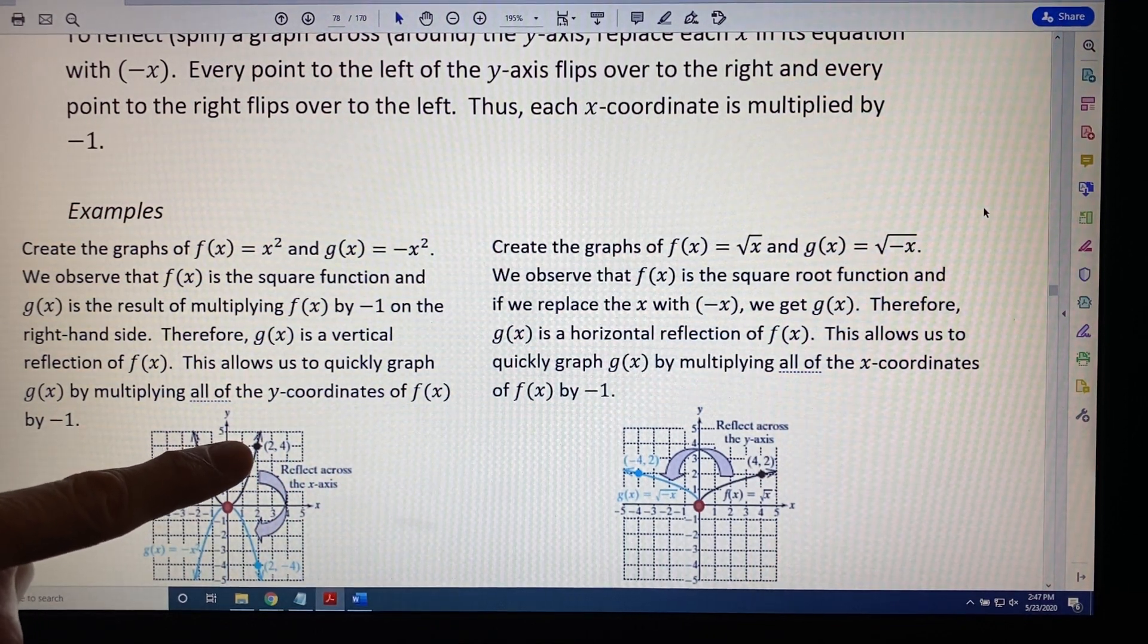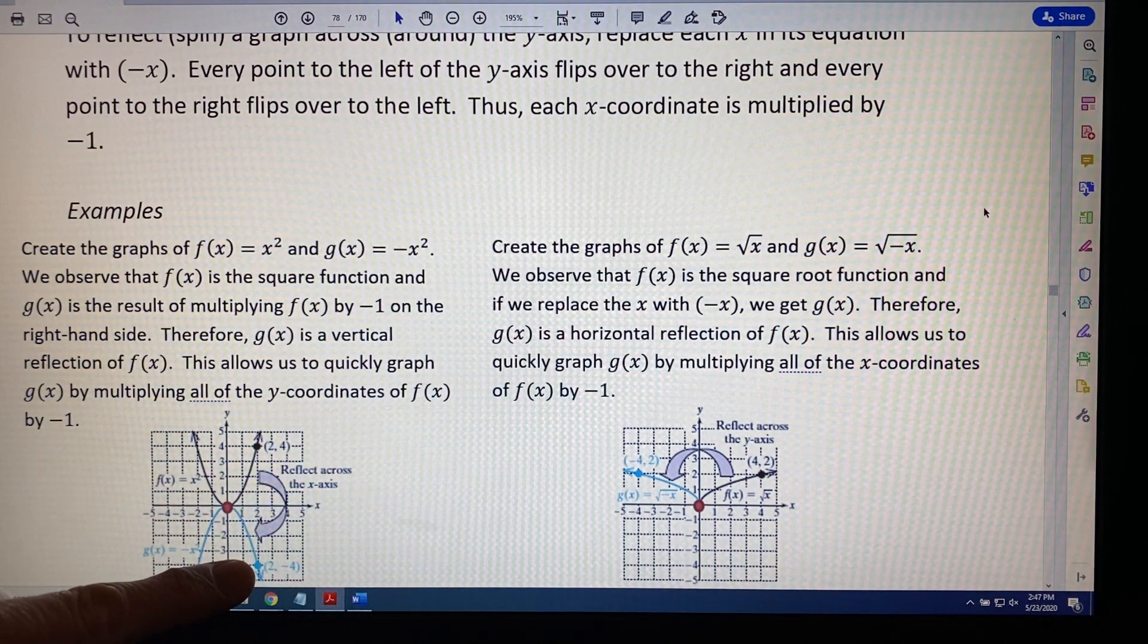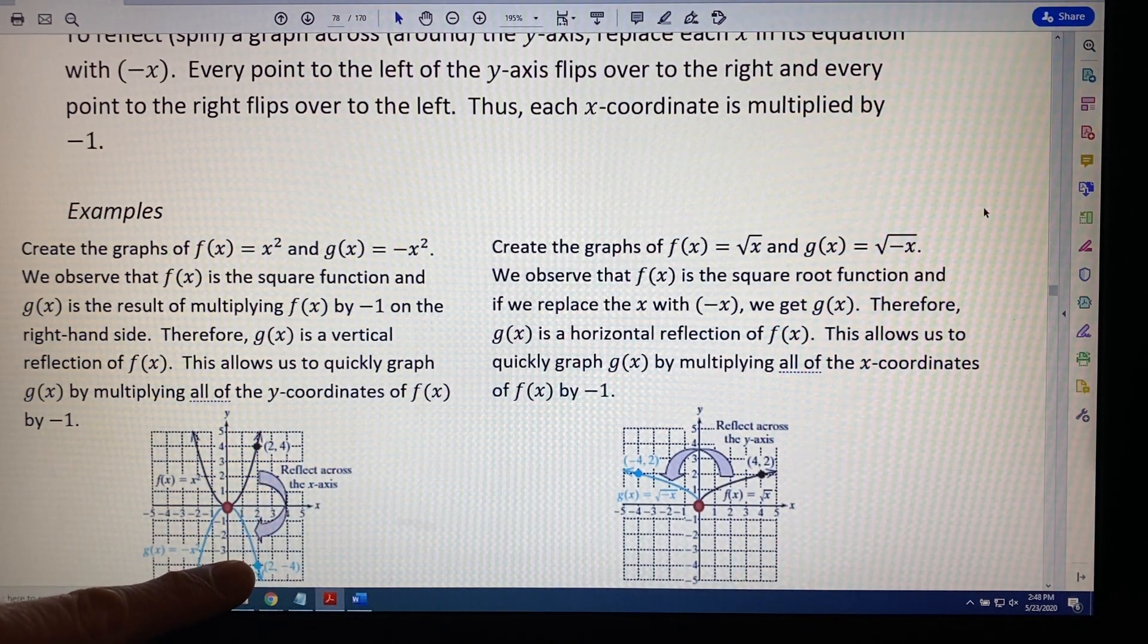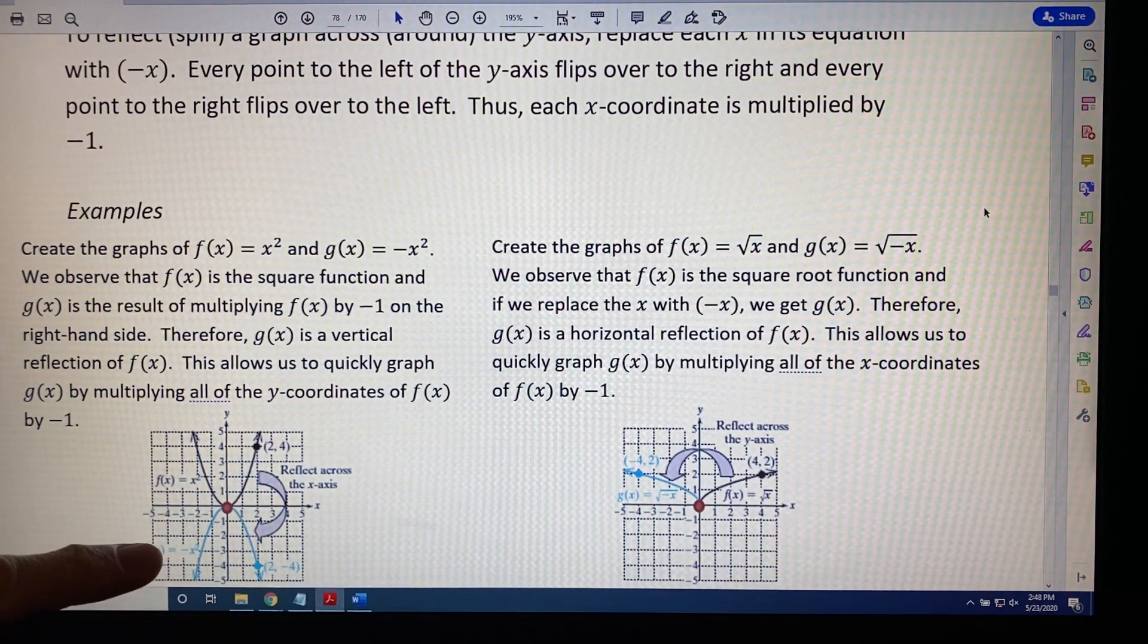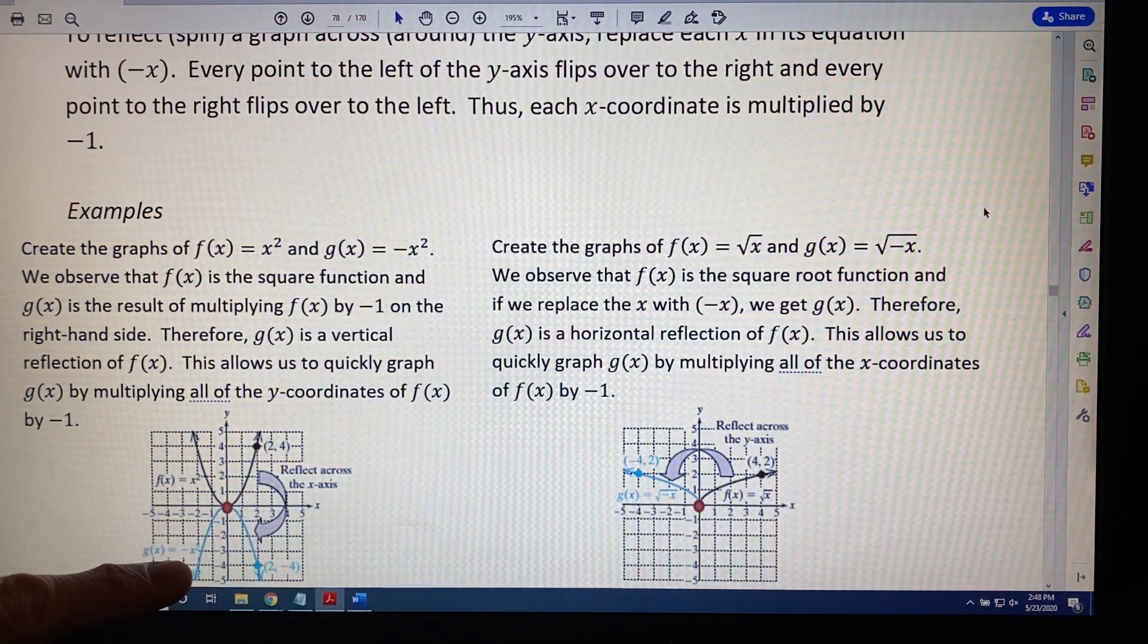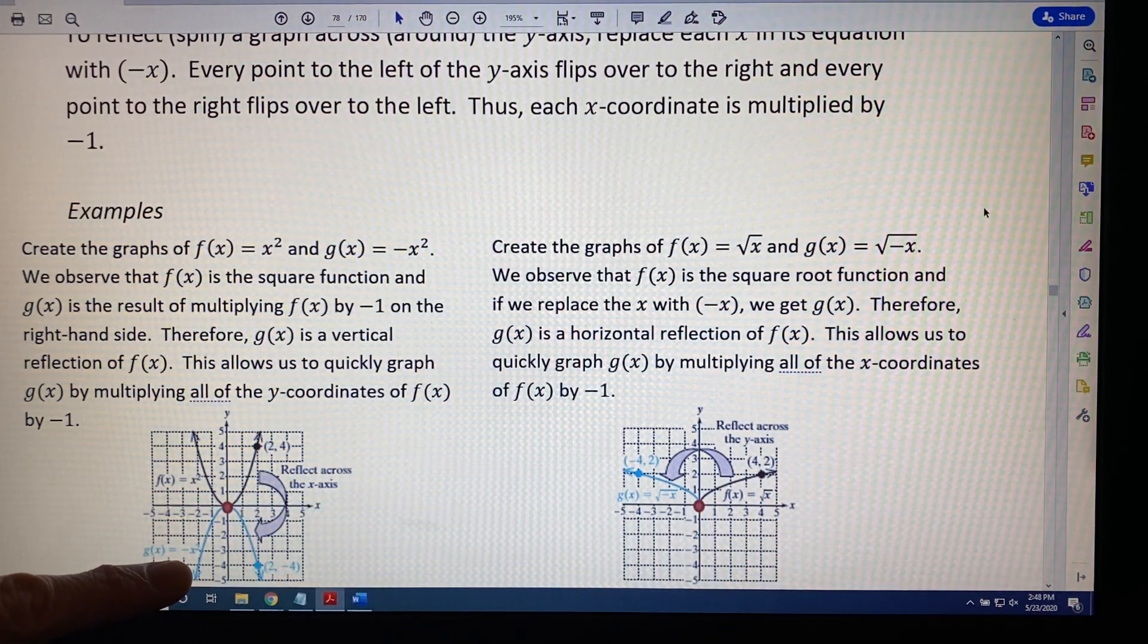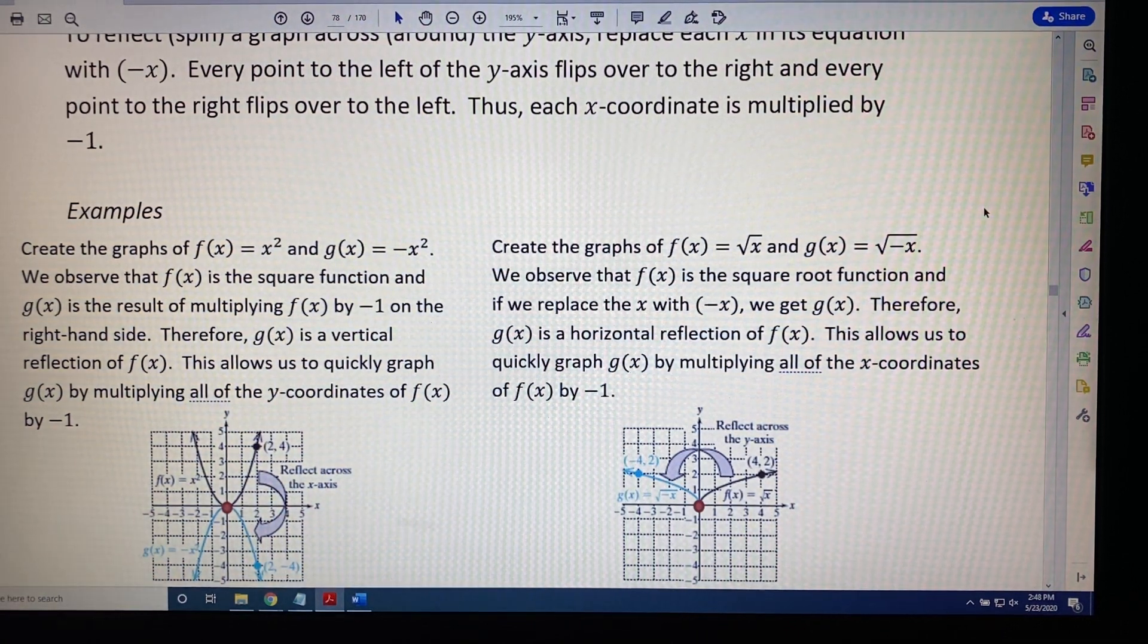So for example, this one point on the black curve, (2, 4), now corresponds and becomes the new point (2, -4). The y-coordinates all change signs. So we get points on the blue curve such as (-2, -4), (-1, -1), (0, 0), (1, -1), and (2, -4).